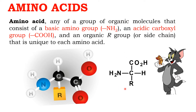By general formula, we could represent an amino acid as R–C(NH2)–COOH. The COOH group is the acidic group and the NH2 group is the basic group. Any organic compound which contains both the NH2 group as well as the COOH group is called an amino acid.